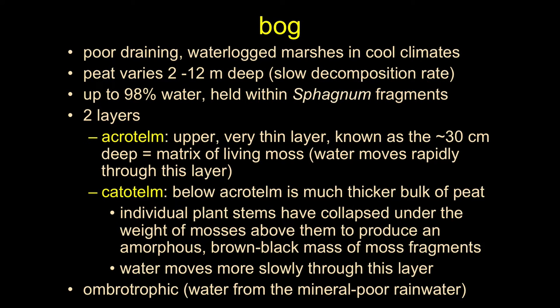Bogs have peat that tends to be deeper — anywhere from a couple meters to maybe tens of meters. We already mentioned slow decomposition rates. Bogs tend to be in cool areas; we don't get bogs in hot places like Southern California because evapotranspiration is too great to get them started. This is more a Pacific Northwest, cool-forest type of environment.